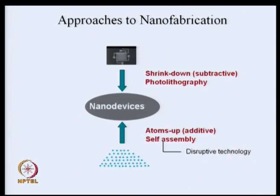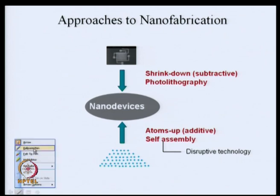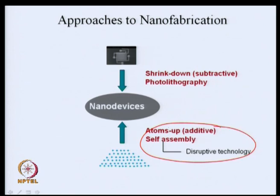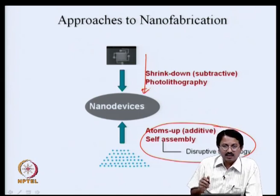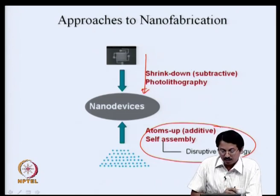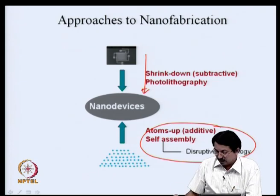These are the two ways to arrive at nano devices. As of today, there is a lot of research going on in self-assembly technology to create nano devices — if successful, that would be truly disruptive technology, similar to how biology builds complex systems. However, all the technology we have been building is essentially shrink-down technology, and all processes discussed in this course will be restricted to that approach.